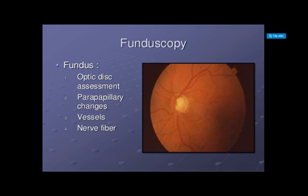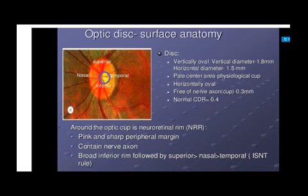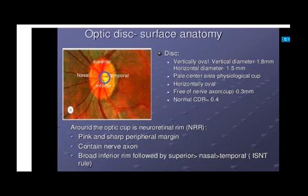On fundoscopy, we assess the optic disc and its parapapillary changes, vascular changes, and nerve fiber changes. Normally, the optic disc is vertically oval, 1.8 by 1.5 mm diameter. The pale central area is the physiological cup, which is horizontally oval and free of nerve axons at 0.3 mm. Normal cup-to-disc ratio is 0.4. Around the optic cup is the neuro-retinal rim, which is pink with a sharp peripheral margin containing nerve axons. The ISNT rule states that the rim is broadest inferiorly, then superiorly, nasally, and temporally.